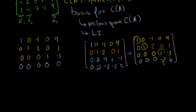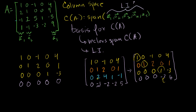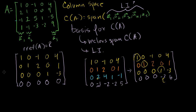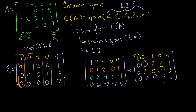We've put our matrix in reduced row echelon form. Let me call that matrix R. Looking at matrix R, it has three pivot entries, or three pivot columns. Column 1 is a pivot column, column 2 is a pivot column, and column 4 is a pivot column.